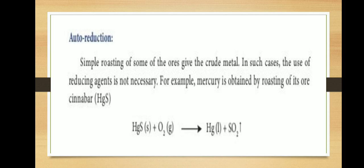Autoreduction: simple roasting of some ores gives the crude metal directly; in such cases, the usage of a reducing agent is not necessary. For example, mercury is obtained by roasting its ore cinnabar (HgS). HgS reacts with air on heating to form mercury metal directly — this is autoreduction.